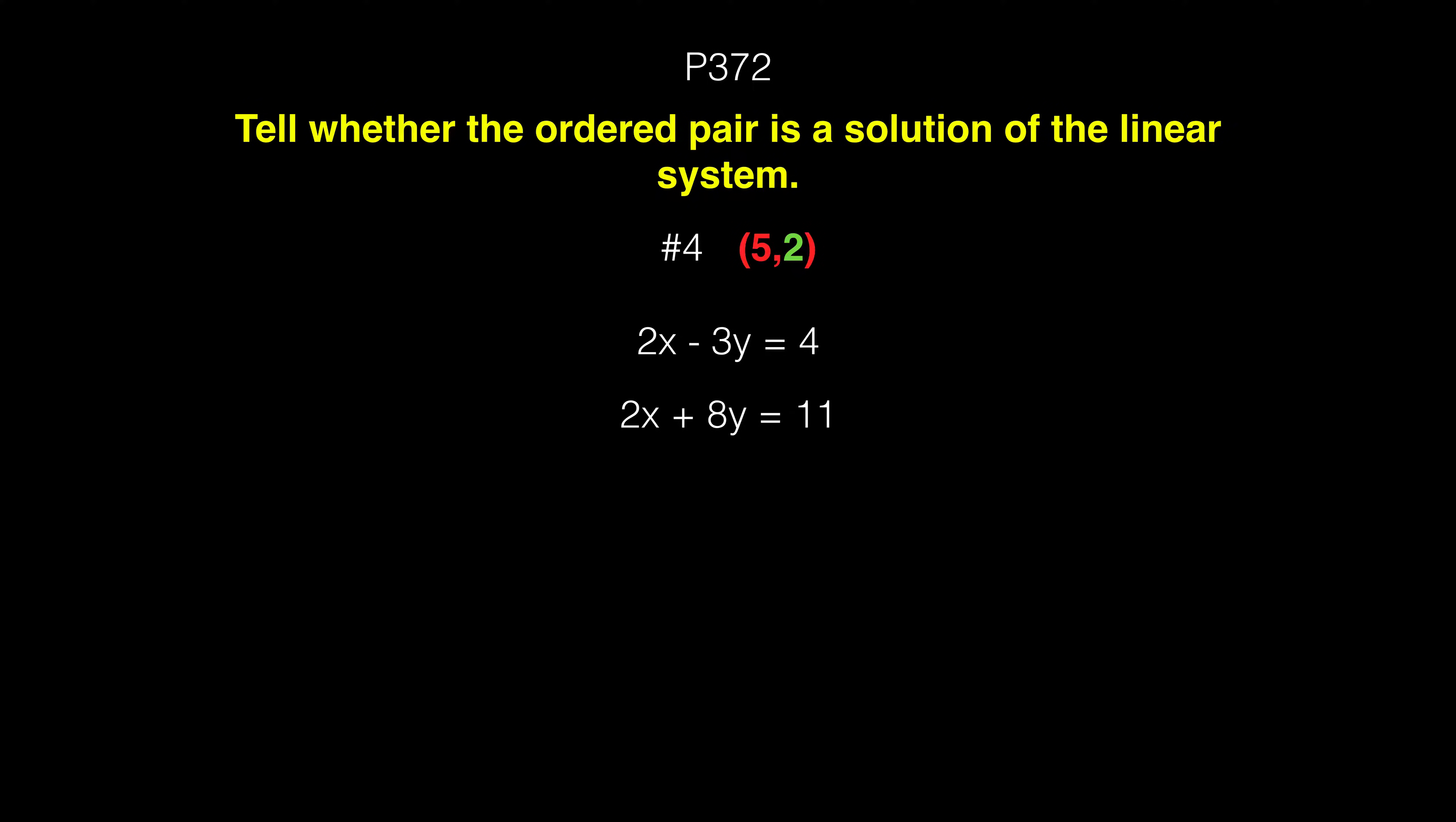So that's our coordinate point. One of the first things you'd want to do is turn these equations into y-intercept form. The 5 and 2 are a coordinate point referring to these two. But actually, with this particular set of problems, there's a very easy way to tell whether the ordered pair is a solution.